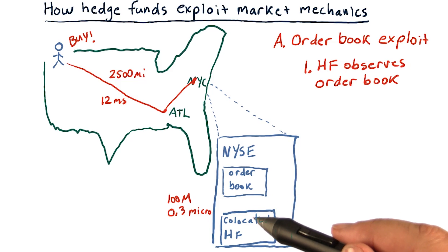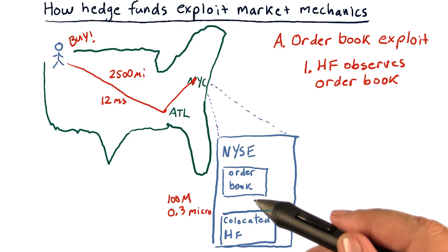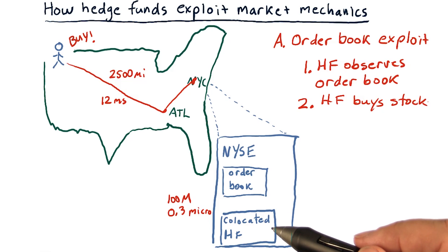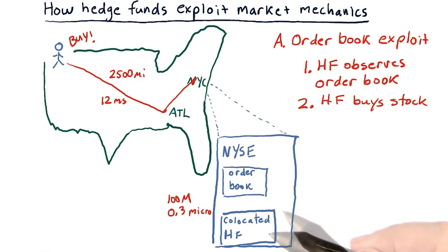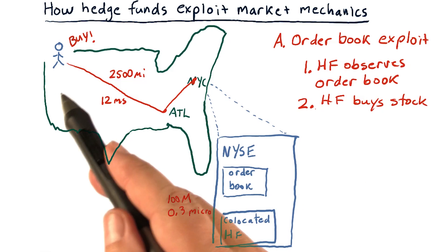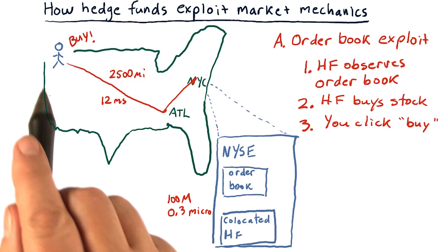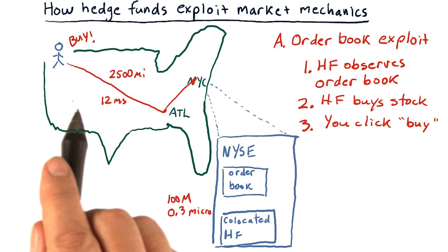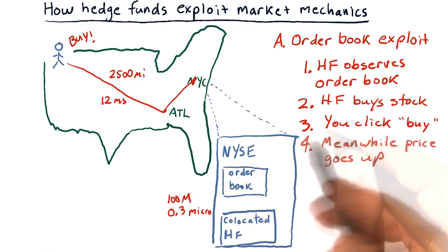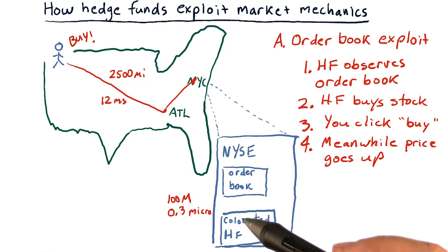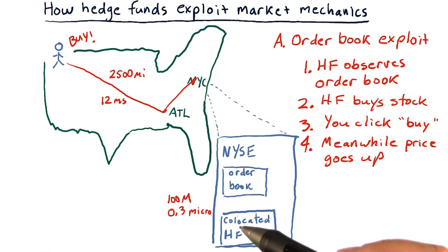Based on what it sees at the order book, the hedge fund thinks the price is going to go up, so it buys some of that stock. You're thinking the same thing, so you've entered a buy order and it starts making its way across the country. While your order is coming across the country, indeed, the price is going up because other orders are coming in from other places.